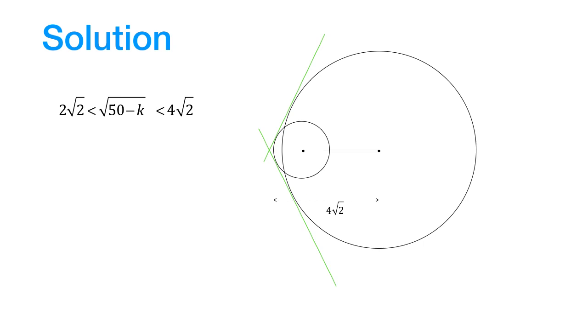It's very clear that k must be less than 50. Now the three terms in this inequality are all positive. So we can square them and we find that 8 is less than 50 minus k which is less than 32.